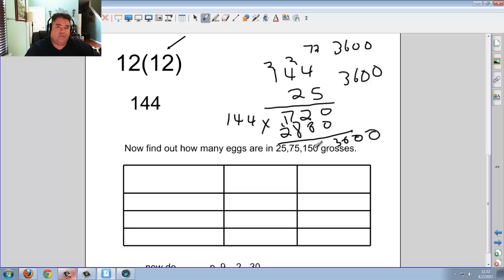For the other ones, for 75, because 25 times 3 is 75, just take this times 3, and you're going to get, I believe, 10,800. And then 150, you just double it to 21,600. Hopefully you got all the right answers.